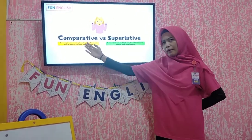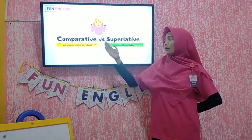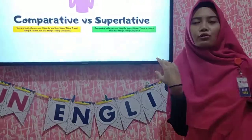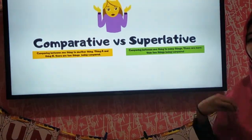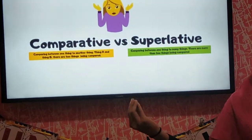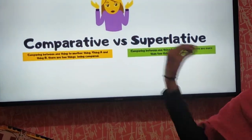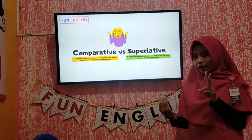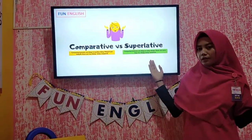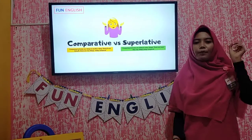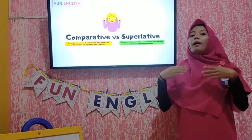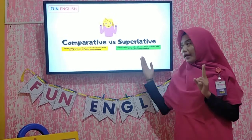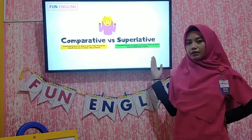So what is comparative and what is superlative? Comparative is basically when you want to compare between one thing to another thing, like thing A and thing B. So there are two things being compared. But in superlative, you compare between one thing to many things. So there are more than two things being compared in superlative.